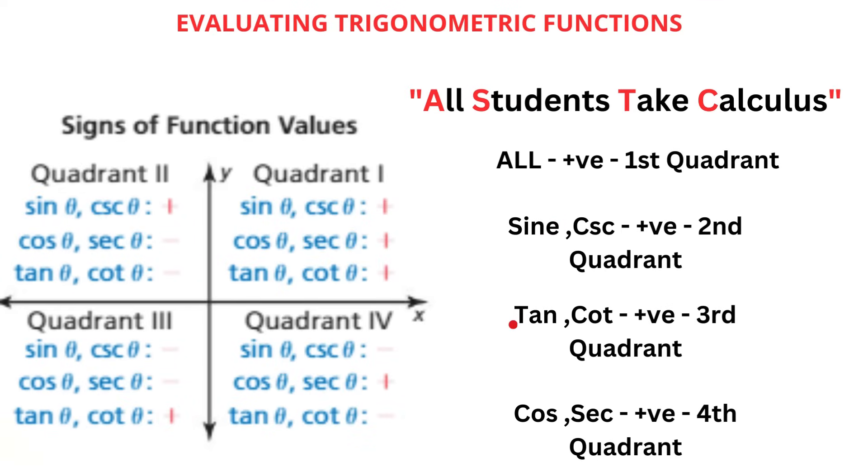Evaluating trigonometric functions. To remember this, use the phrase all students take calculus. In the first quadrant, all trigonometry functions are positive. In the second quadrant, sine and its reciprocal cosecant are positive, represented by S as in students. In the third quadrant, tan and its reciprocal cot are positive, represented by T as in take. And in the fourth quadrant, cos and its reciprocal secant are positive, represented by C as in calculus.